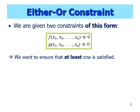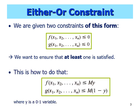How can we ensure that at least one of them is satisfied? What you can do is convert those constraints into this form. The functions f and g stay the same on the left-hand side, but on the right-hand side you change it from zero to M times y for the first constraint, and M times (1 minus y) for the second constraint. Here, y is a 0-1 variable.